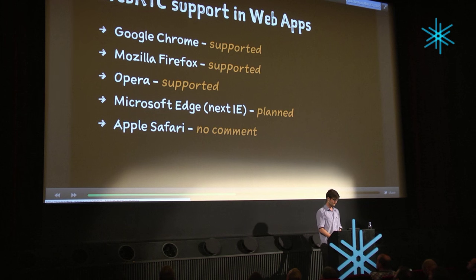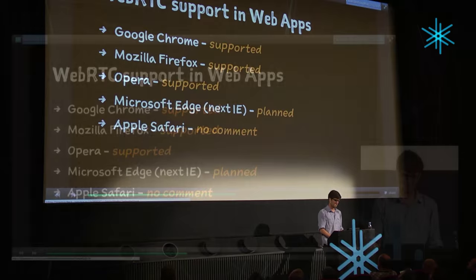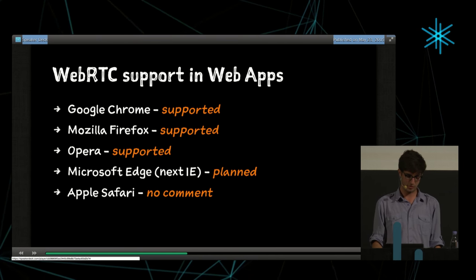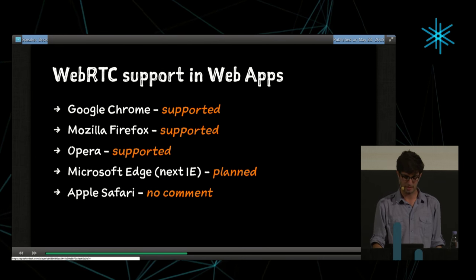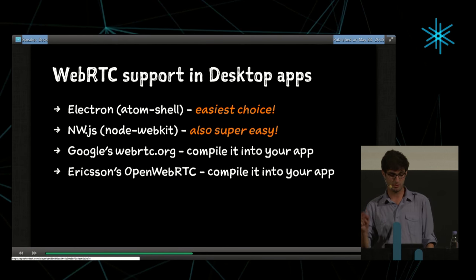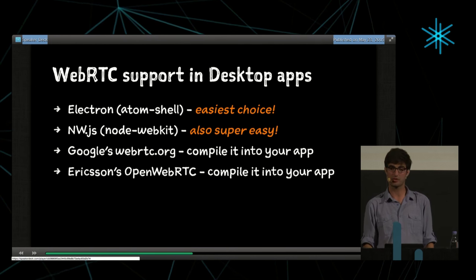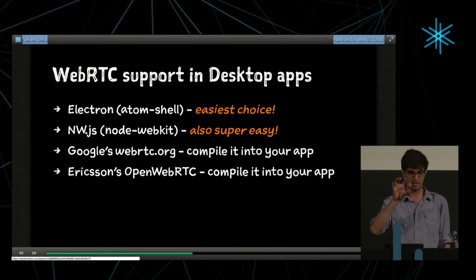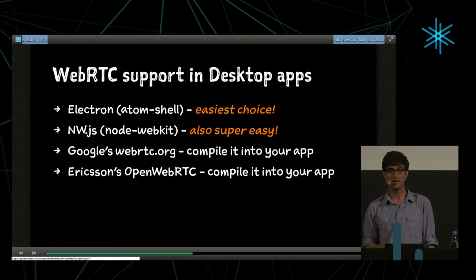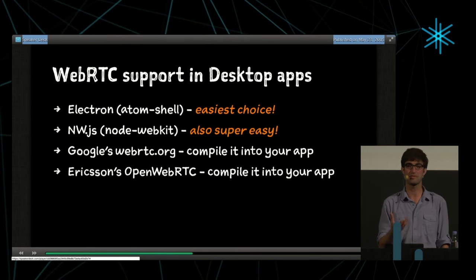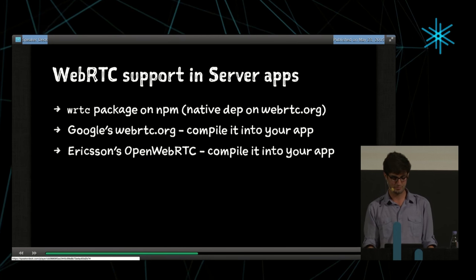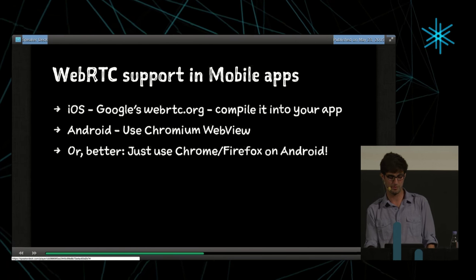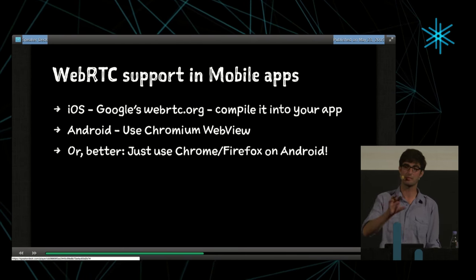WebRTC works in many browsers today. Microsoft Edge is implementing it now, and Apple is thinking about implementing it soon. The native desktop app I showed was built using Electron, which is what the Atom editor uses — it runs Chromium, giving you a really good WebRTC implementation. So you can build native apps that talk to browsers using Electron. You can also use WebRTC on the server side with various packages, and compile the WebRTC library into iOS apps even though Safari doesn't support it.